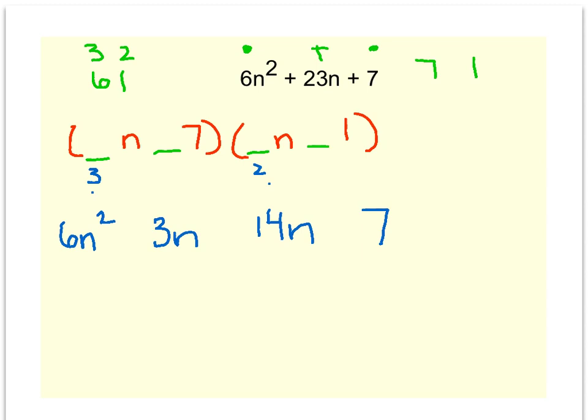And now tell me, is there any way that the 3 and the 14 can add up to be a positive 23? There just isn't. So I know that using 3 and 2 here just didn't work out. That happens. Let's try the next one.